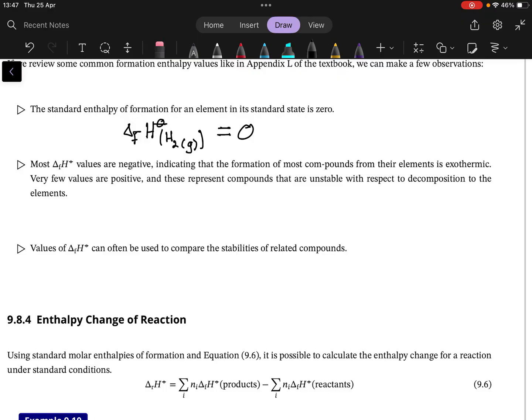And if they are positive, it means this compound is very likely unstable with respect to decomposition of its elements. So for example, it would be if the enthalpy of formation of AB is positive, then it will readily decompose to A plus B, or something like that.